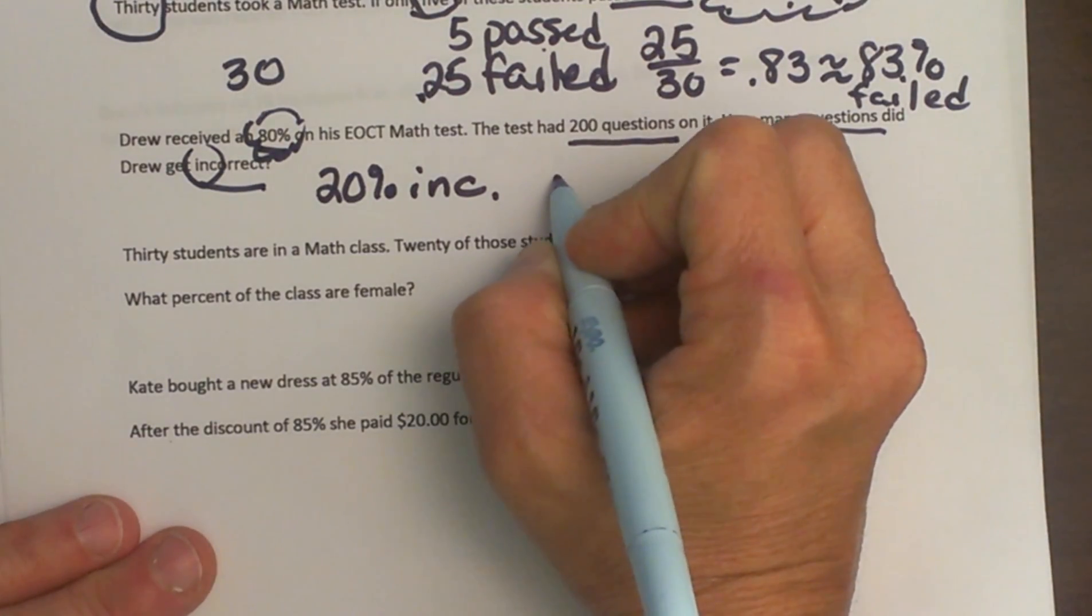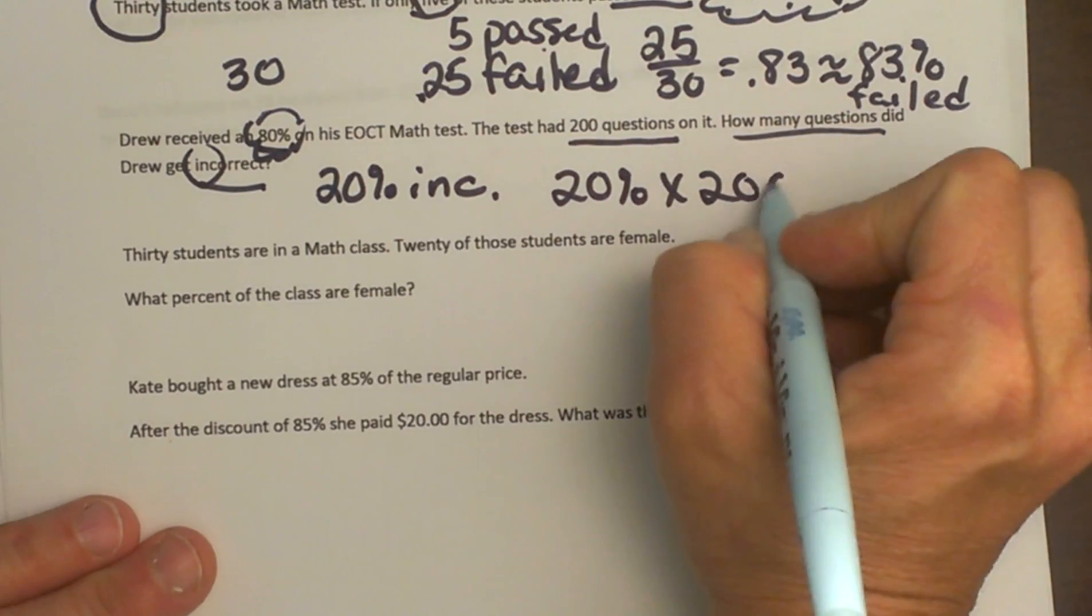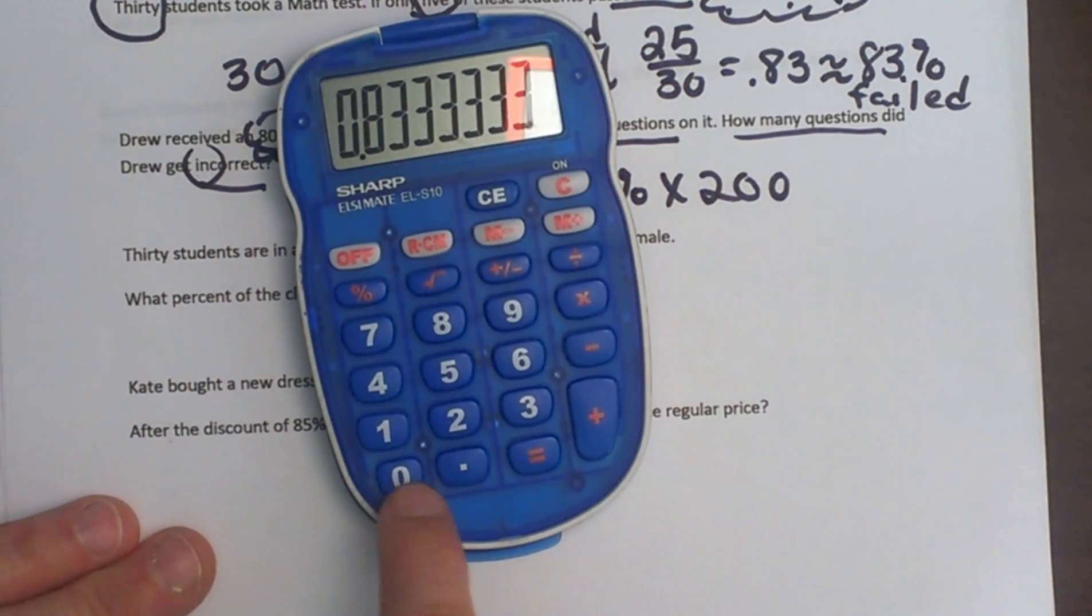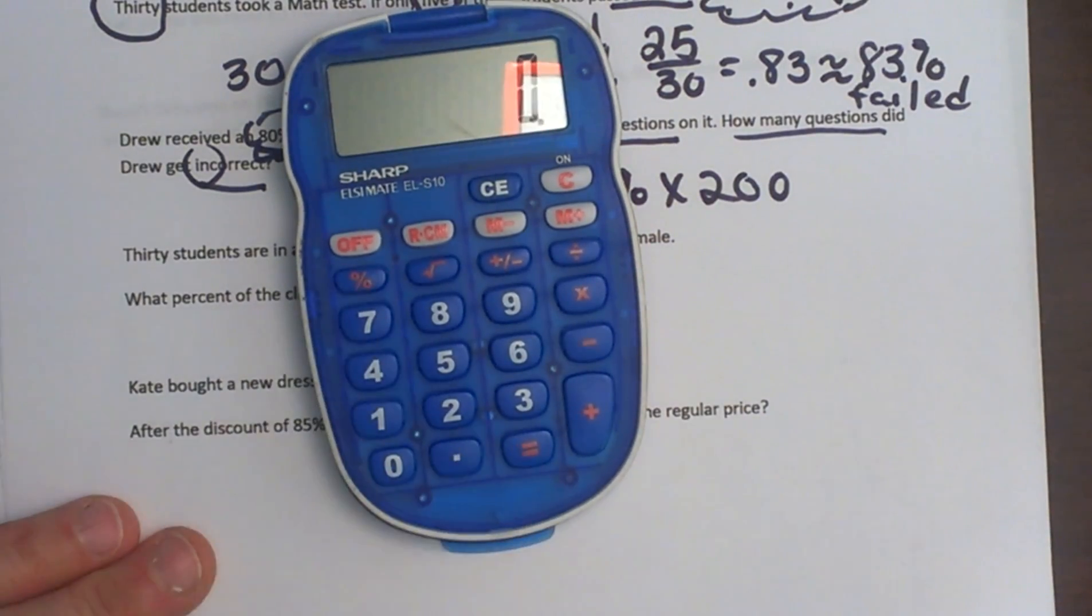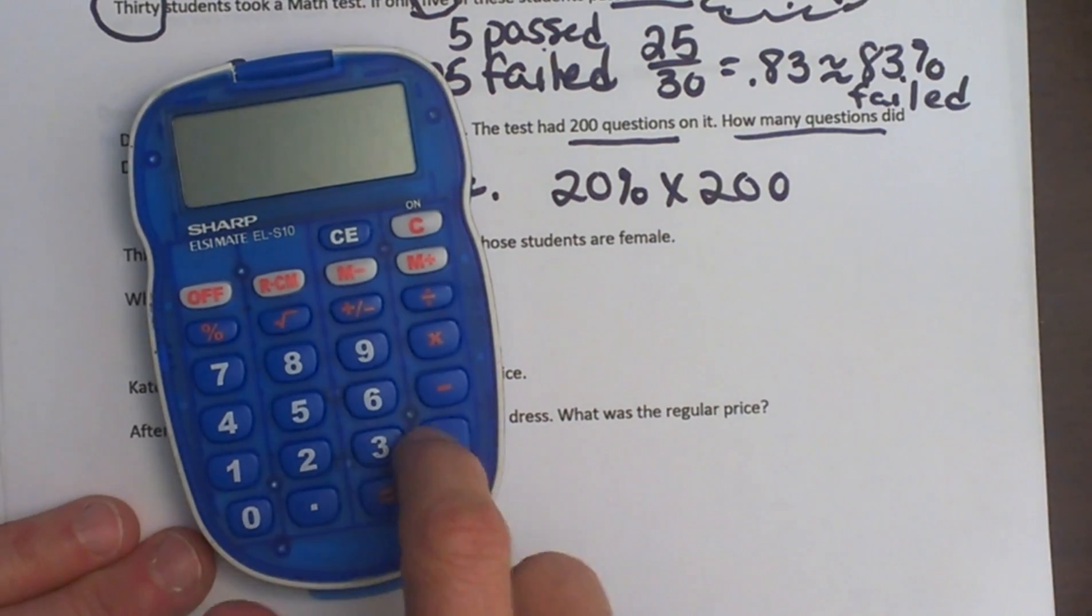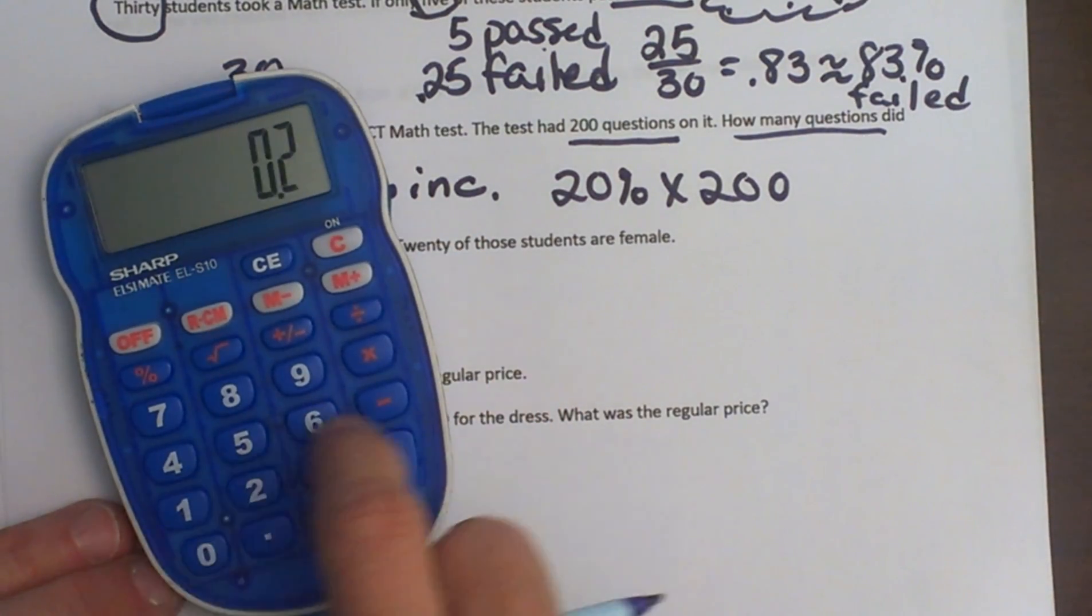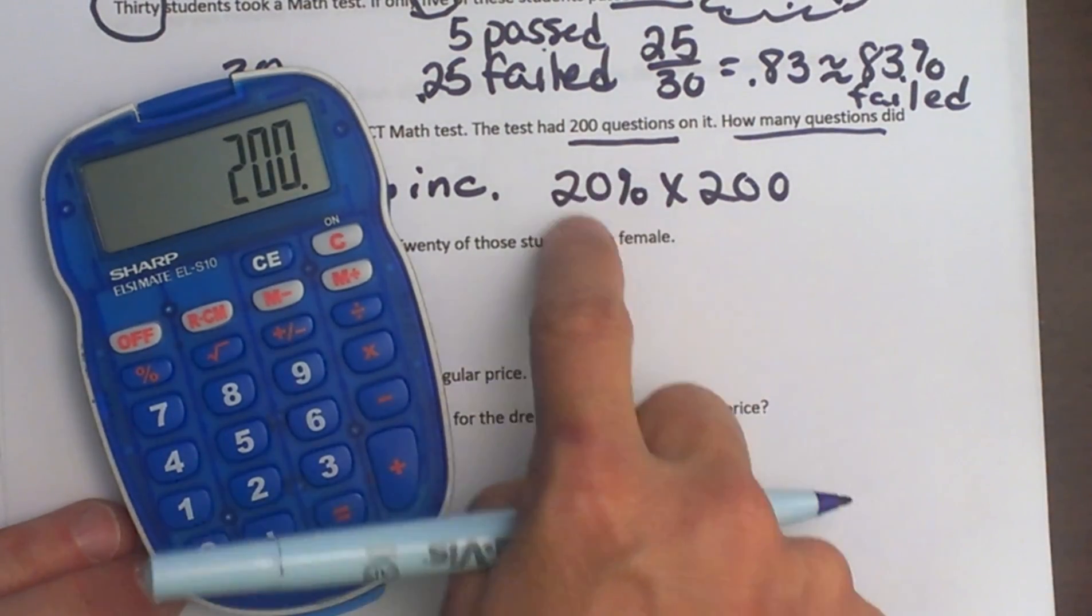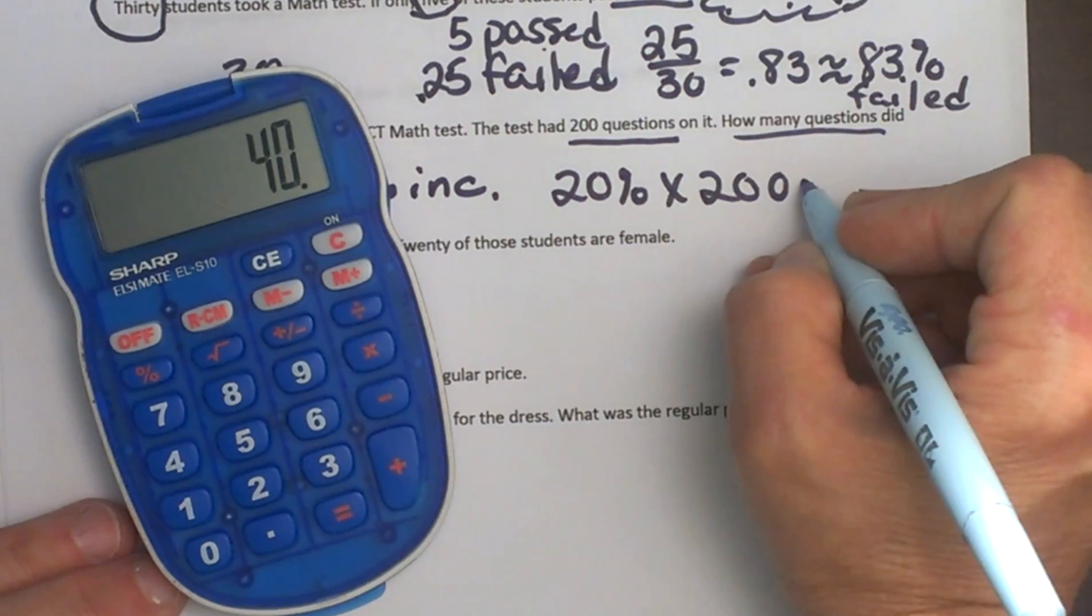We need to know 20% of, which is multiplied by 200 questions. And so let's go over here and type that in, clear this out, 20 and hit my percent button. And it moves the decimal twice times 200. Let's see, 0.2 times 200, because 20% as a decimal, move the decimal twice, 0.2, and that's going to give me 40.